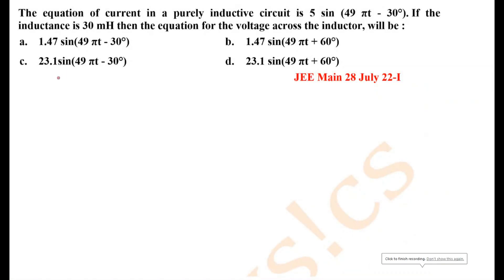The equation of current in a purely inductive circuit is 5 sin 49 pi t minus 30 degrees. If the inductance is 30 mH, then the equation of voltage across the inductor is.